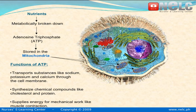Let us begin with adenosine triphosphate. Adenosine triphosphate, or ATP, is a chemical metabolically broken down from nutrients and stored in the form of energy in the mitochondria, or the powerhouse of the cell. ATPs are crucial in the cell's functions, and normal cellular processes are hampered in the absence of ATP. ATP stores should constantly be replenished for the cells to work properly.